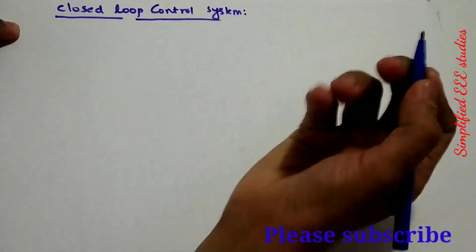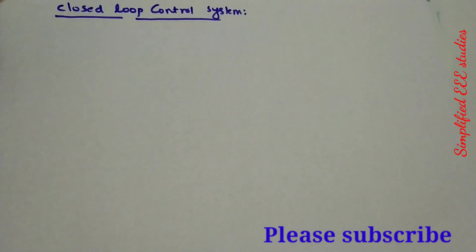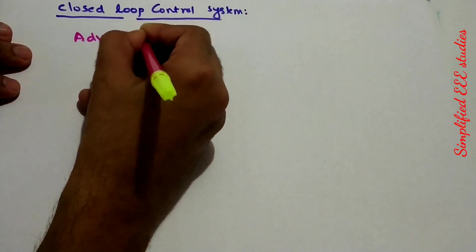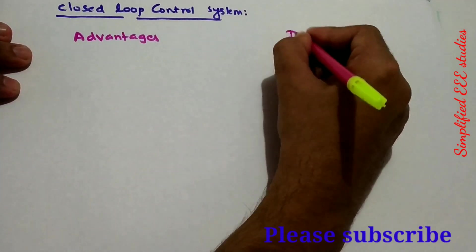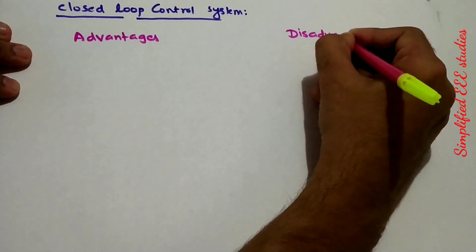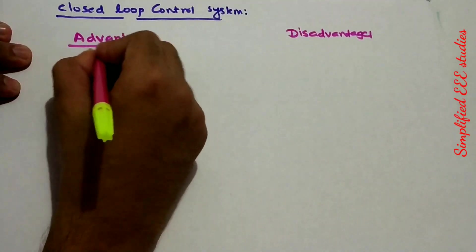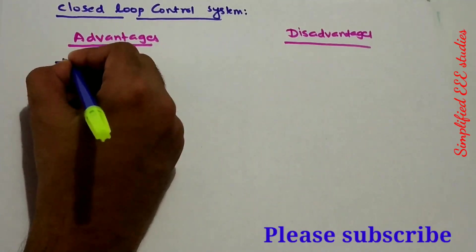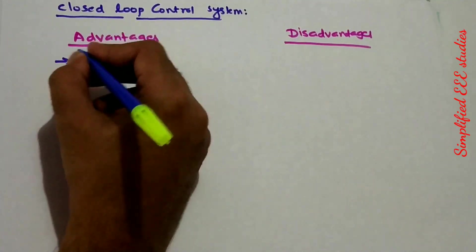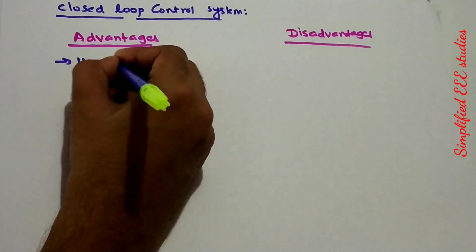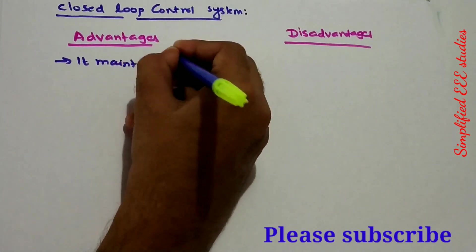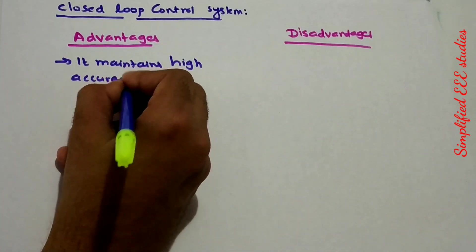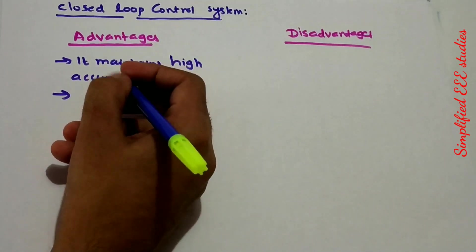What are the advantages and disadvantages? Let us have a brief discussion on that. Advantages. The first advantage is it maintains high accuracy. Compared to open loop system, it maintains very high accuracy.